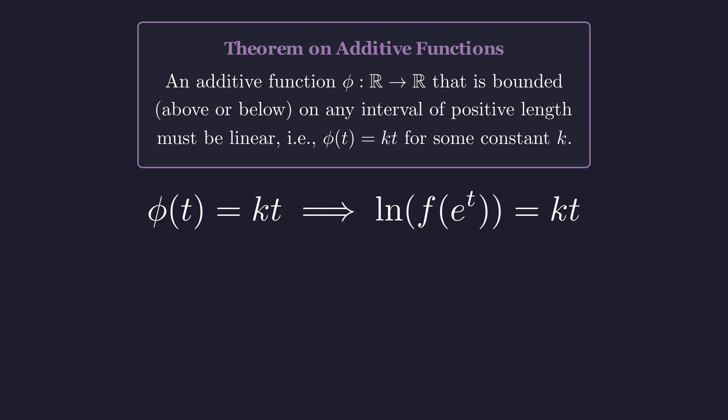Now we just have to transform back to our original function. Exponentiating both sides gives f of e to the t equals e to the power of k times t. Now let's substitute x for e to the t. And there you have it. This rigorously proves that our function must take the form f of x equals x to the power k.